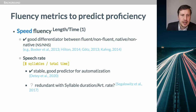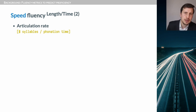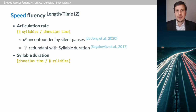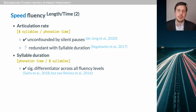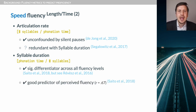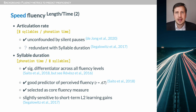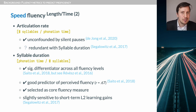Very similar to speech rate is articulation rate — the number of syllables over the phonation time — which has the advantage of being unconfounded by silent pauses. Very close is syllable duration, which is simply the inverse of articulation rate. Studies by Sato and colleagues show it is a good differentiator between fluency levels, a good predictor of perceived fluency, and relatively sensitive to short-term learning gains. It is the only one of the three selected by Sengalowitz and colleagues as a core fluency measure, as they consider the other two redundant — but we'll see what our results say about that.